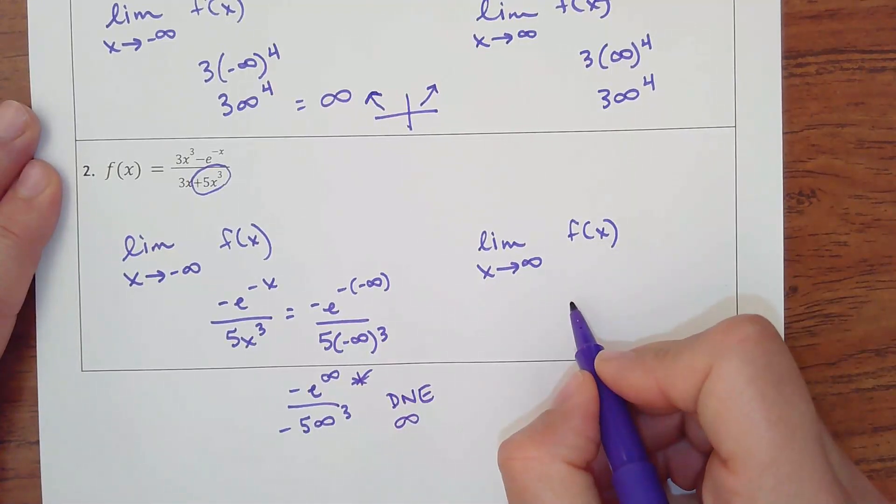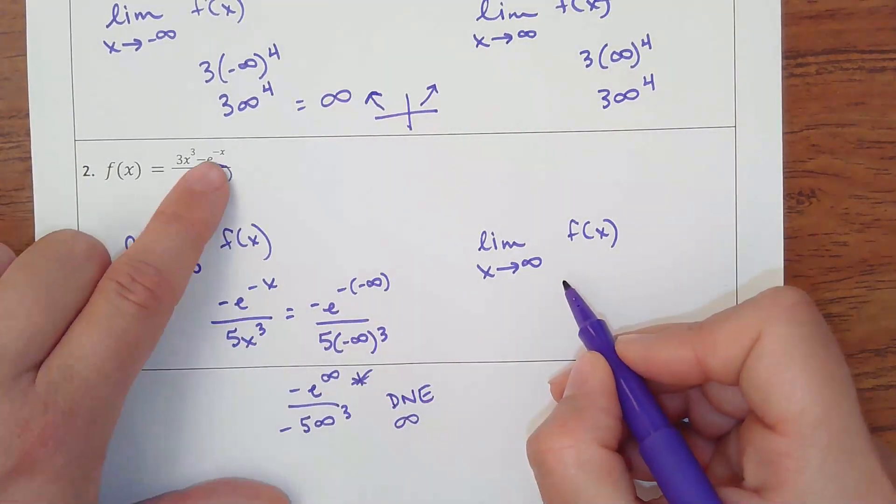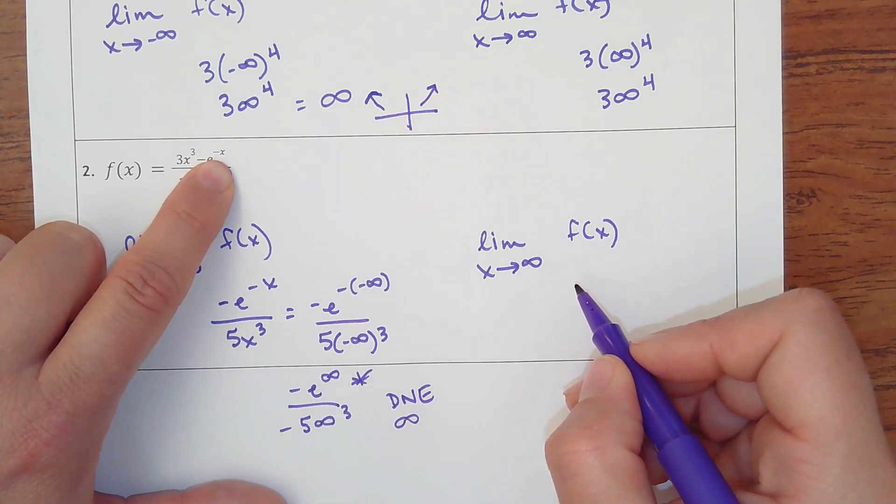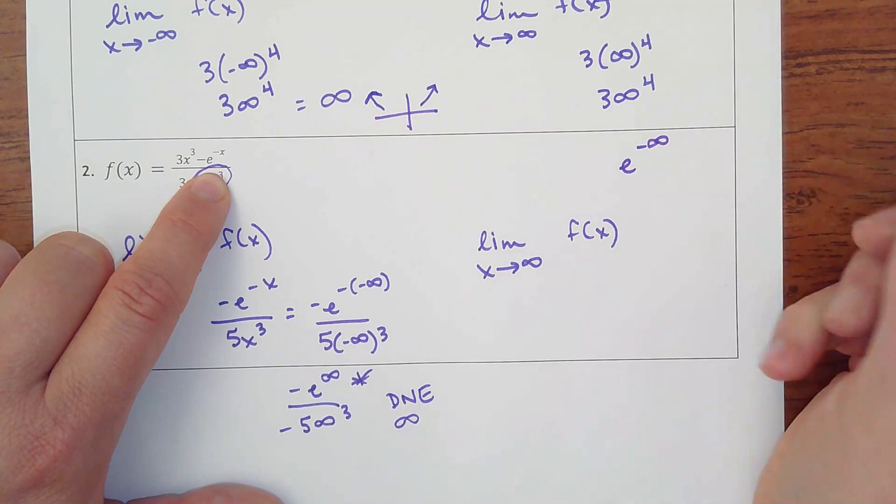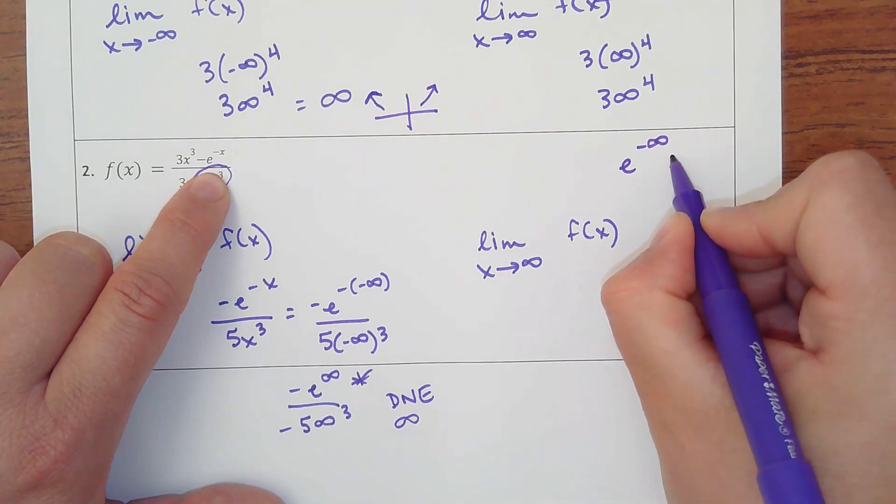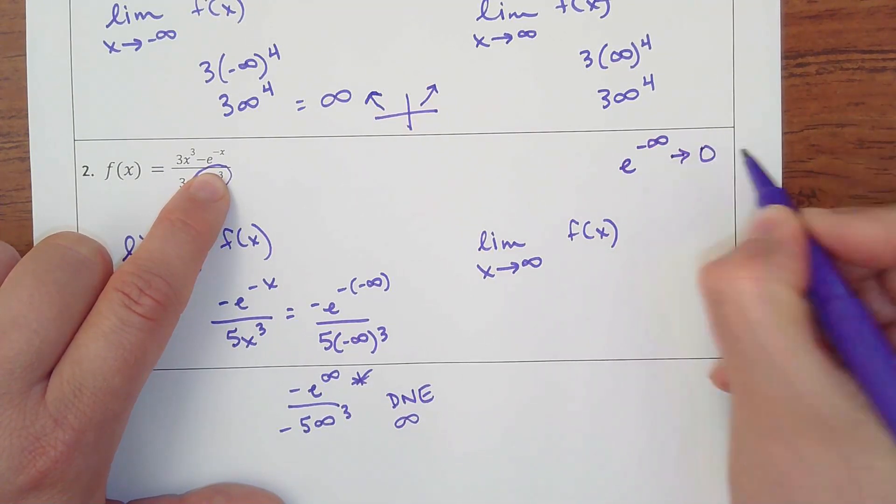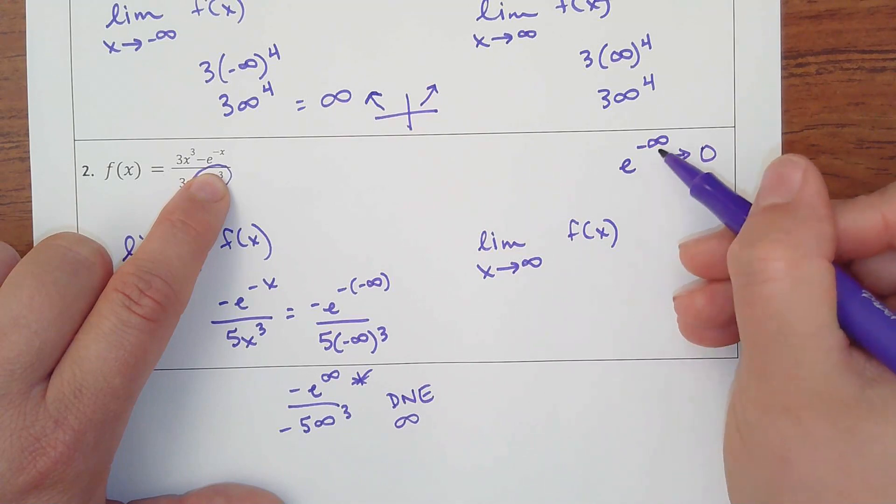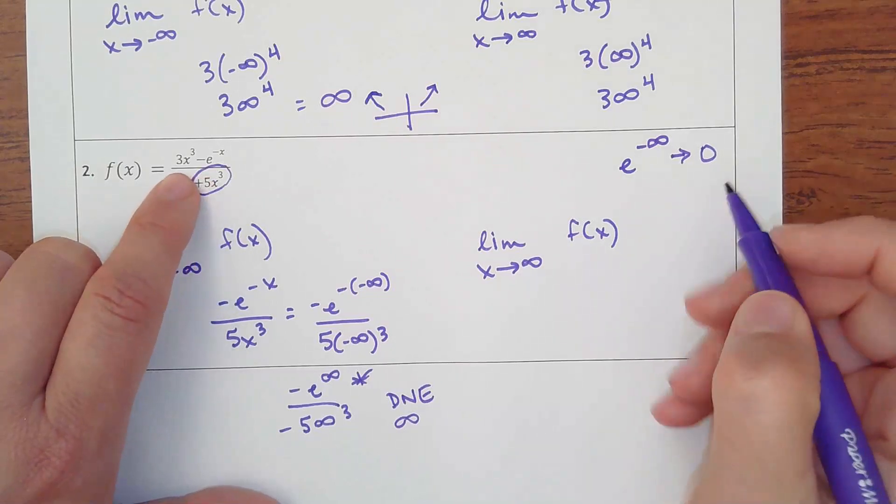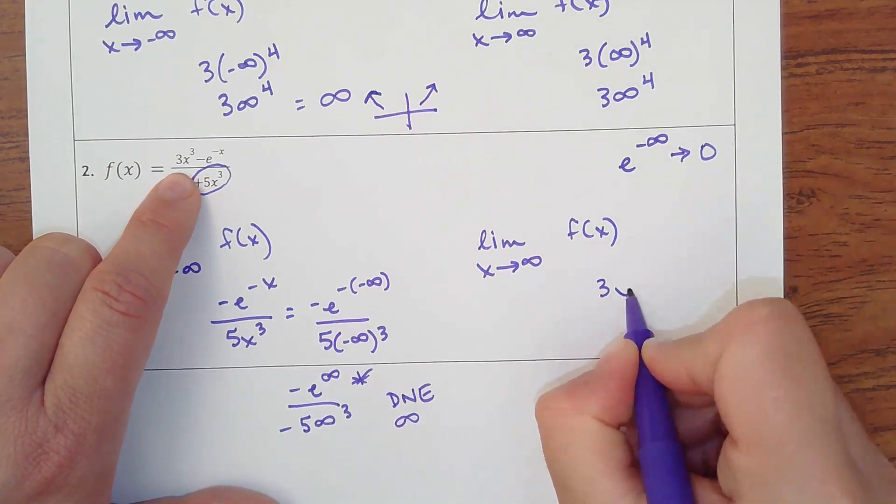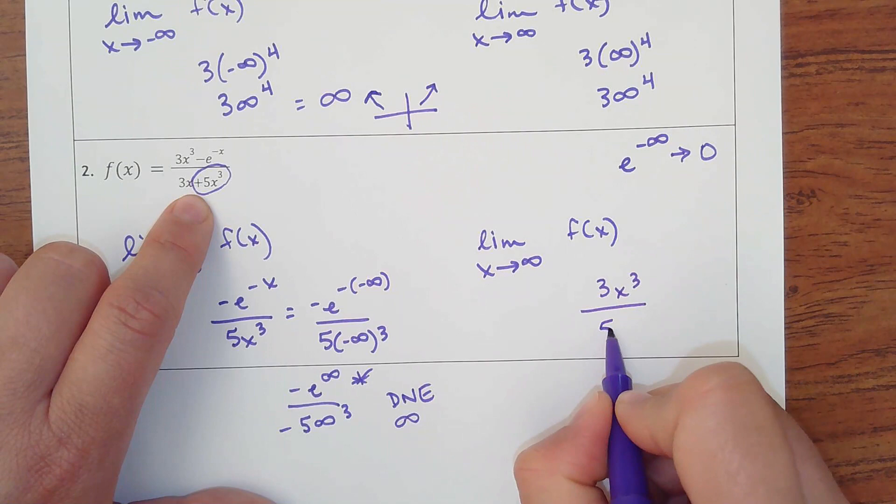All right, the other one, if I were to plug in infinity for the negative x, I'm going to get e to the negative infinity, which remember that really makes zero, because you're taking e to a negative power, which makes it one over whatever and makes it zero. So I actually don't want to use that.